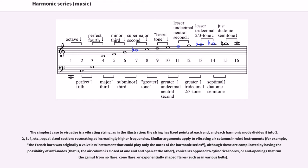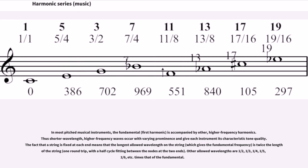Similar arguments apply to vibrating air columns in wind instruments. For example, the French horn was originally a valveless instrument that could play only the notes of the harmonic series, although these are complicated by having the possibility of anti-nodes, that is, the air column is closed at one end and open at the other, conical as opposed to cylindrical bores, or end openings that run the gamut from no flare, cone flare, or exponentially shaped flares such as in various bells.